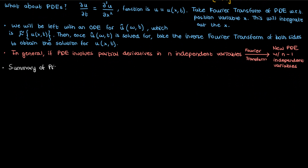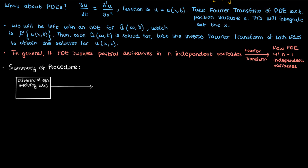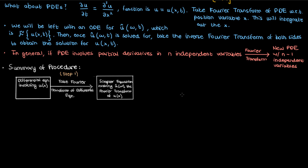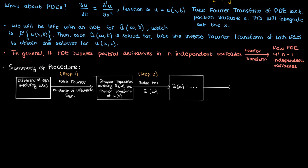Let me summarize the Fourier transform process. We start with a differential equation involving u of x — u could still depend on other variables like y, z, and t, but x is what we're Fourier transforming. Step one: take the Fourier transform to obtain a simpler equation involving u-hat of omega. This equation could be algebraic, an ODE, or a less complex PDE, but the key is that it's easier to solve than the original. Step two: solve the simpler equation to get an expression for u-hat of omega. Step three: take the inverse transform of u-hat to end up with an explicit equation for u of x.